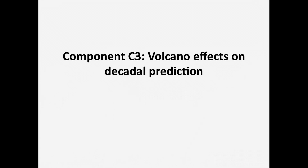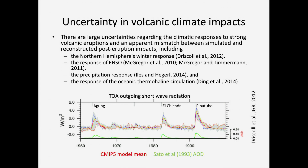I'm going to quickly introduce the second part of Component 3, which is the volcano effect on decadal prediction. As a background, there is still a lot of uncertainty and conflicting results on what exactly is the impact of volcanic eruptions, and particularly there's a mismatch from what you find in the models and what people have found in the observations and proxies.